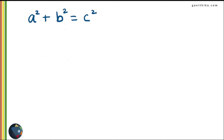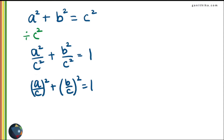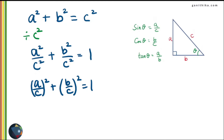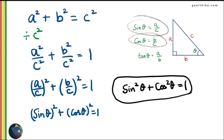Now let's use the Pythagoras theorem and divide by C squared. We get A squared over C squared plus B squared over C squared equals 1, which can be rewritten as (A/C)² + (B/C)² = 1. Since A over C is sin theta and B over C is cos theta, this gives us sin²θ + cos²θ = 1.